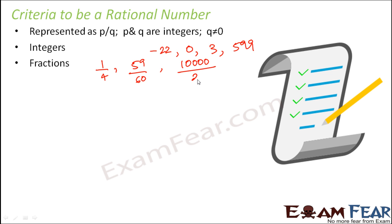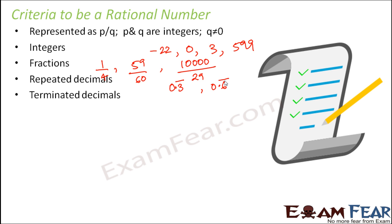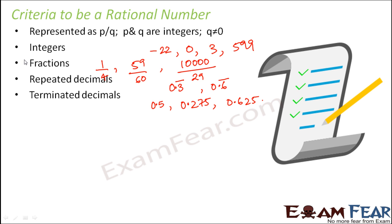10,000 divided by 29 — all of these are rational numbers. Repeated decimals, such as 0.3 bar where 3 repeats, or 0.6 bar where 6 repeats, are also rational numbers. Terminated decimals — decimals with a fixed number of digits after the decimal point, like 0.5, 0.275, and 0.625 — are also rational numbers.